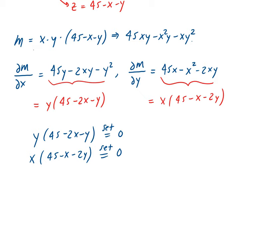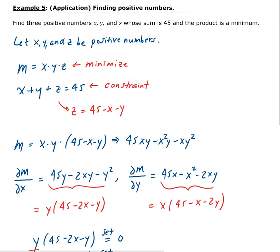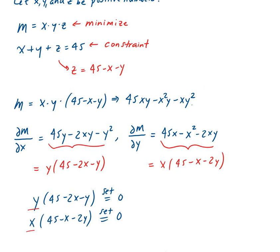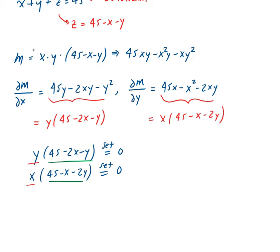If we let x and y be zero, that satisfies the equations, but we don't want that because the numbers must be positive, and zero is not a positive value. So we need to work with the non-trivial equations: 45 minus 2x minus y equals zero, and 45 minus x minus 2y equals zero.